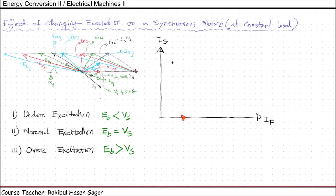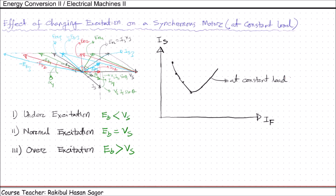For this particular field current, we are getting this Is current. Now if we increase field current, that means we are increasing excitation. In that case, initially the armature current will start decreasing. So for a higher amount of field current, the armature current will be decreasing. If we keep plotting, the armature current will be minimum at this point. Then if we keep increasing the field current, that is if we keep increasing the excitation, again the armature current will start increasing. So if we connect all the dots, we will get a shape like this. This is at constant load — suppose that load is L1. You will find this curve will look like a shape of V, English letter V. That is why it is called the synchronous motor V curve.